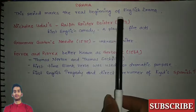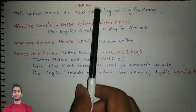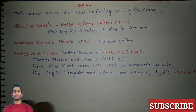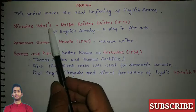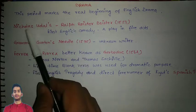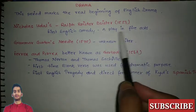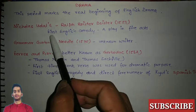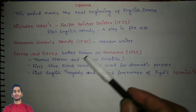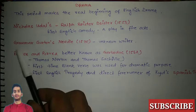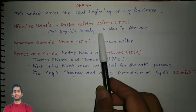Now let's talk about the first dramas. This period marks the real beginning of English drama. Nicholas Udall wrote 'Ralph Roister Doister' in 1553. This was the first English comedy and was a play in five acts.